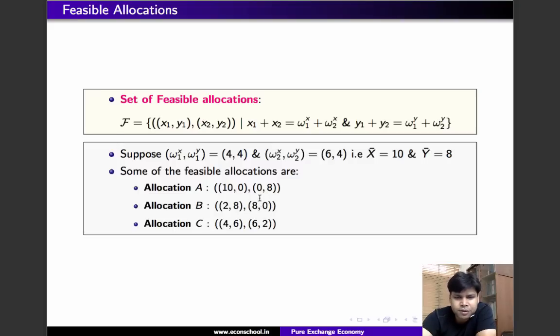Another example is allocation C. You can check clearly that the total amount of x consumed in allocation C is 10 and the total amount of y consumed by the two individuals in allocation C is 8, equal to the total endowment of y available in the economy. So, allocation C is also feasible.